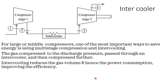Now we will talk about the intercooling arrangement. For all large or mid-size compressors, intercooling is one of the most important ways to save energy in multi-stage compression. In the first stage the gas is compressed, then passed through an intercooler, then to the next stage. This practically reduces the temperature of the gas, so its volume also reduces, and therefore the next stage requires less power. Intercooling reduces power consumption and improves the overall efficiency of compression.